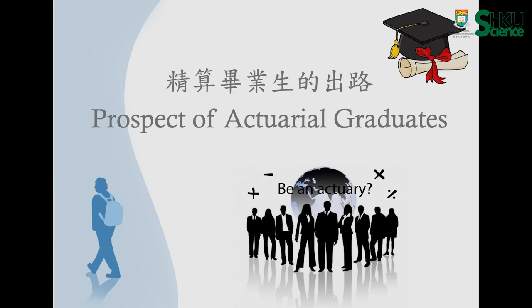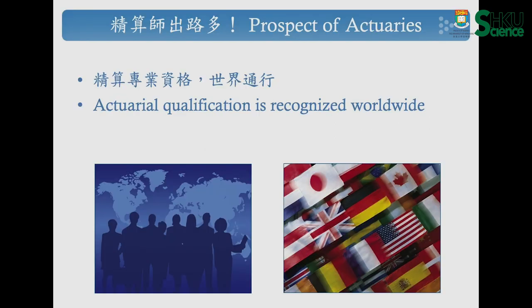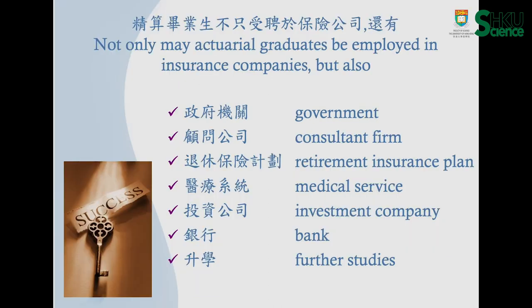How about the prospect of graduates? Is it good in Hong Kong or elsewhere in the world? Actuarial qualification is recognized worldwide. Once you are a qualified actuary, you can work in most developed countries, including the UK, the US, Australia, and Canada. As a graduate, you are not only employed by insurance companies — there are also other organizations and companies hiring actuaries.